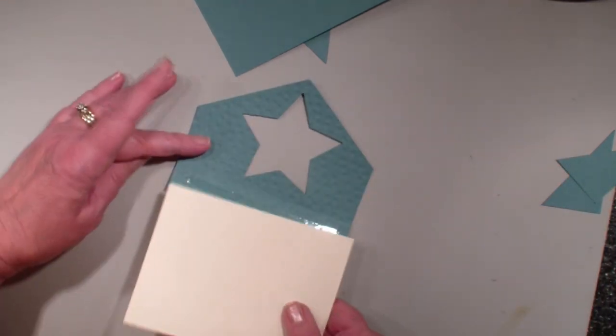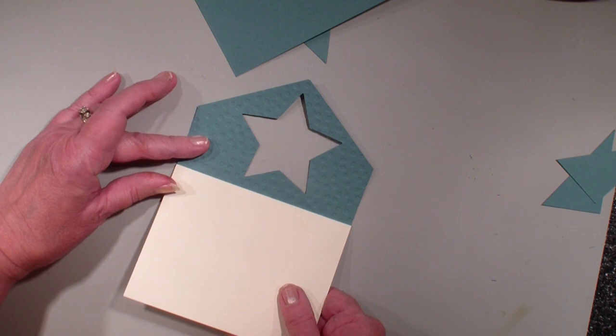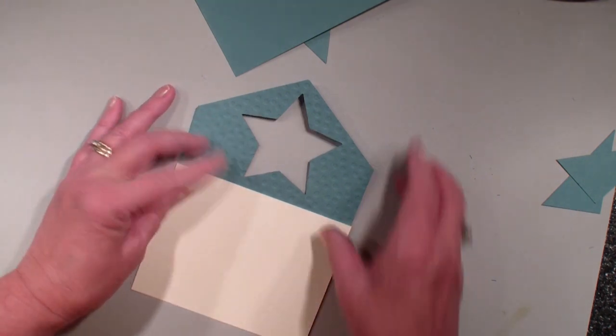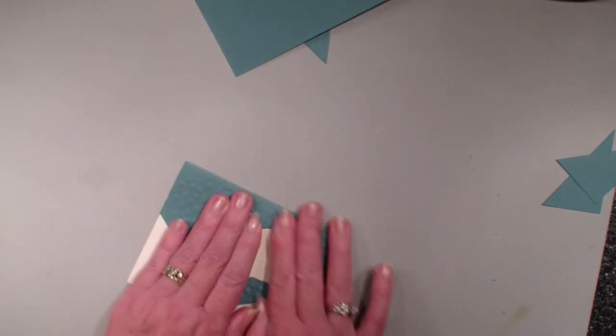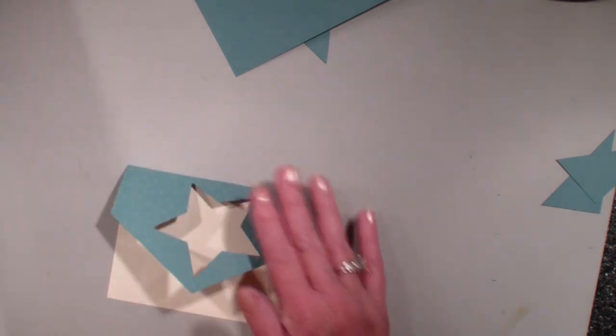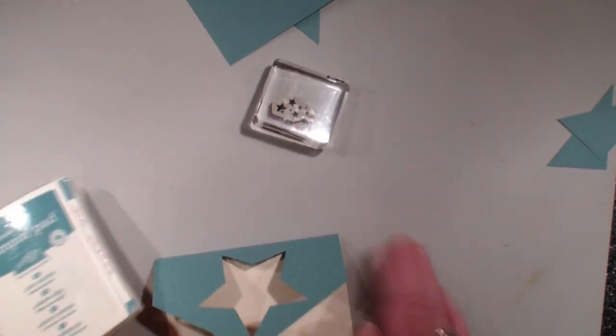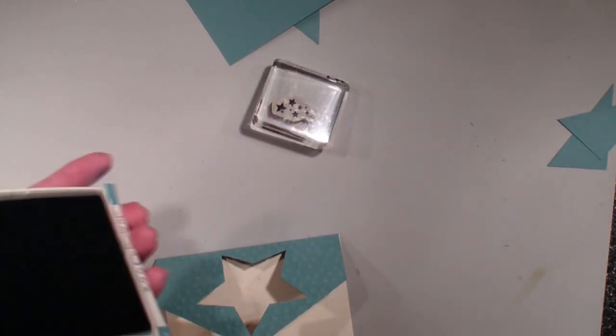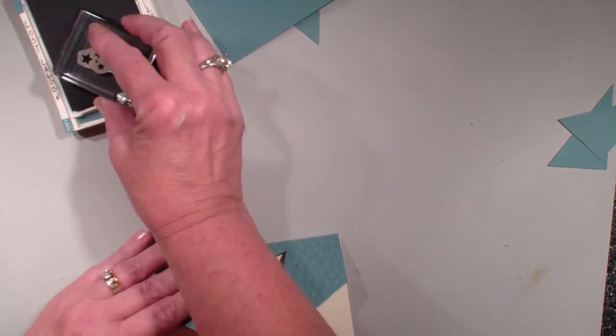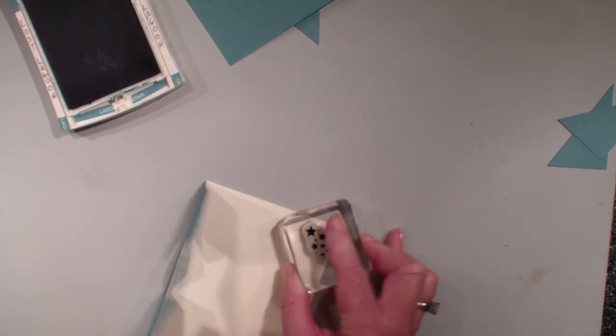Going to line that up with the score line on the front of my card like so. Going to bring in my little stars, this is from that stamp set Be the Star, and I'm just going to use those stars down here in the corner of my card like so.